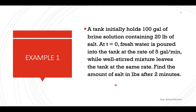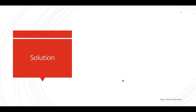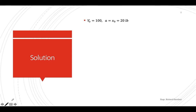Let's have an example. A tank initially holds 100 gallons of brine solution containing 20 pounds of salt. At t equals zero, fresh water is poured into the tank at the rate of 5 gallons per minute, while the well-stirred mixture leaves the tank at the same rate. Find the amount of salt in pounds after 2 minutes.